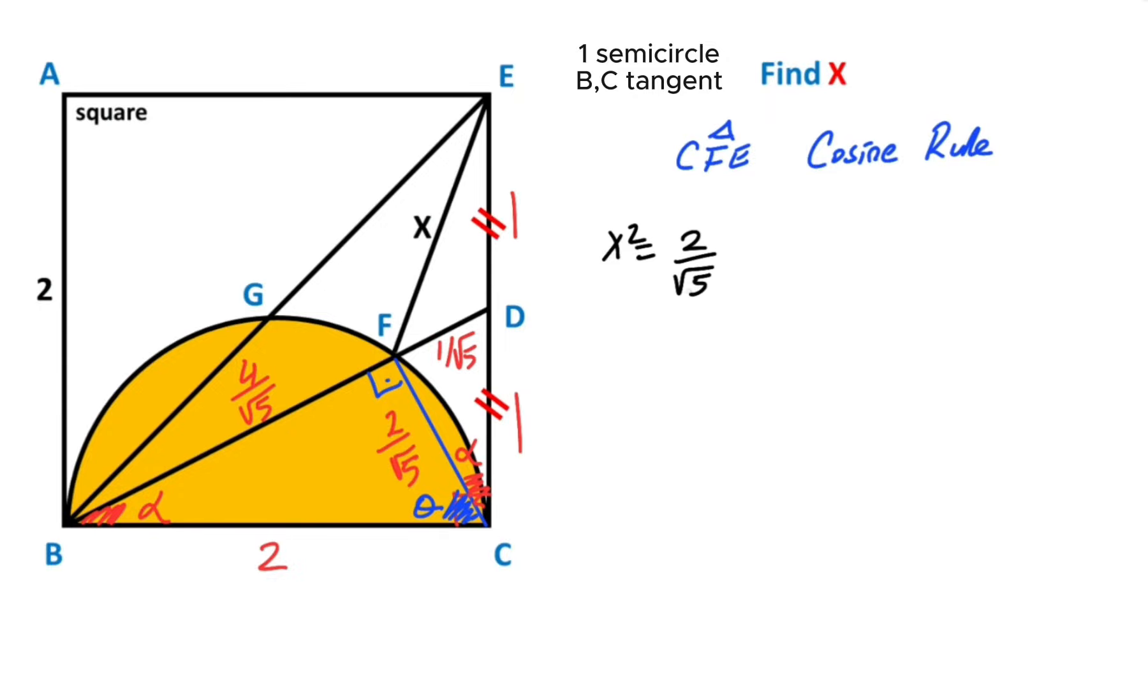x² = (2/√5)² + 2² - 2 × (2/√5) × 2 × cos(α), right?